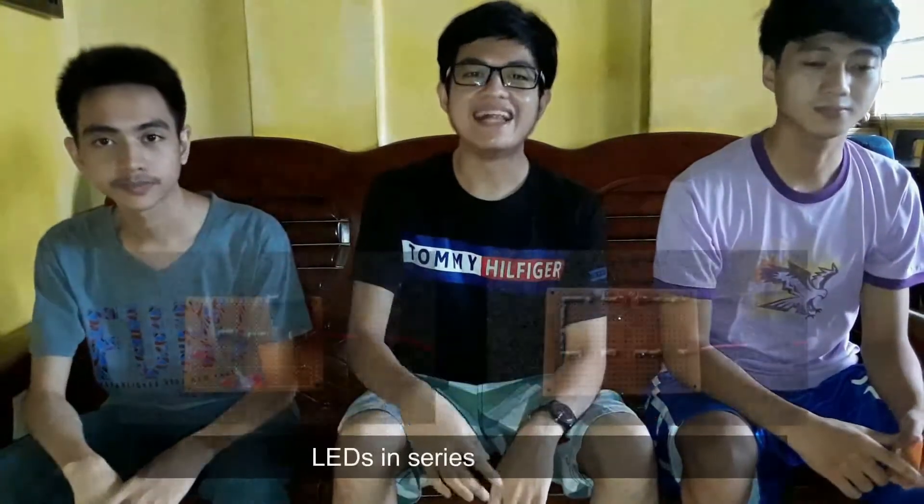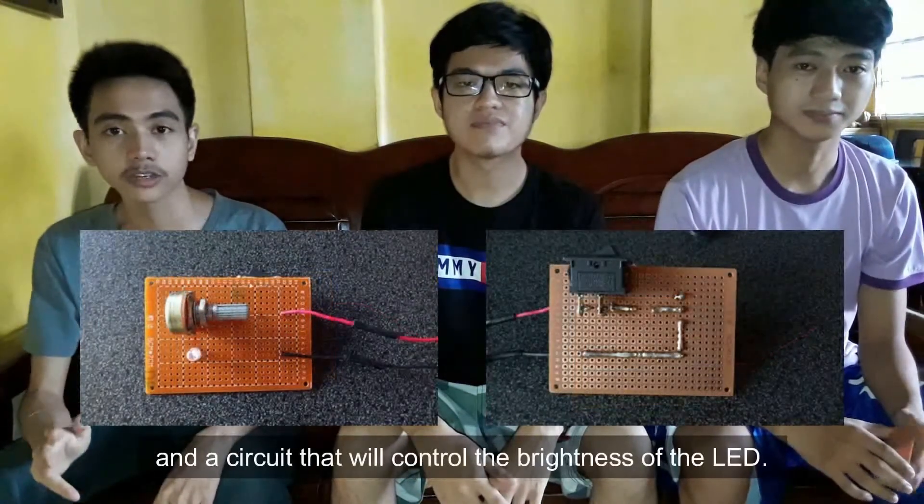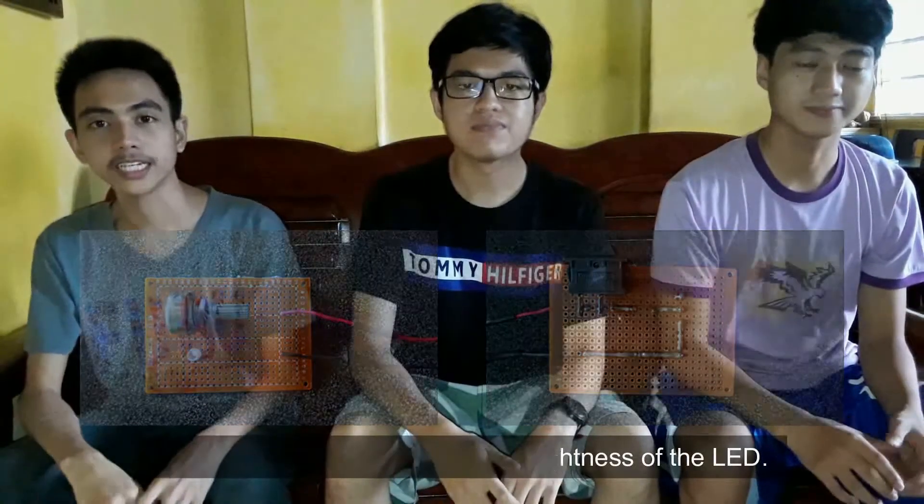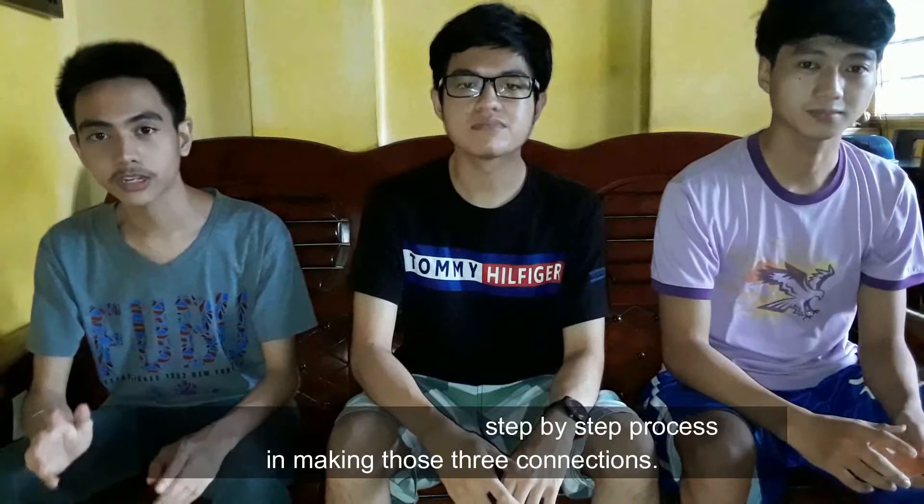We're going to make three circuits. These are LEDs in series connections, LEDs in parallel connections, and a circuit that will control the brightness of the LED. We're going to show the step-by-step process in making these three connections.